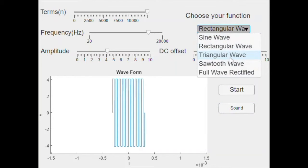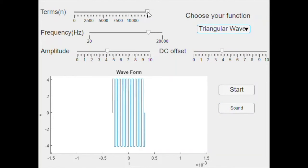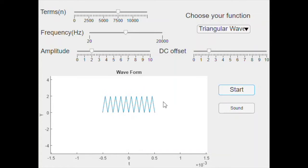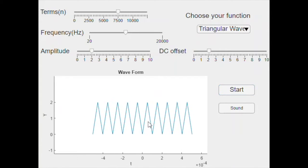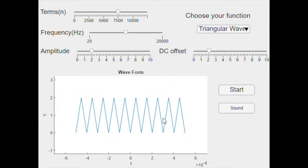Okay, nice. And let's try a triangular wave. Let's see terms about 7,500. Frequency to 10,000, amplitude to 2, DC offset to 2. See what does it look like. Oh, here we go.